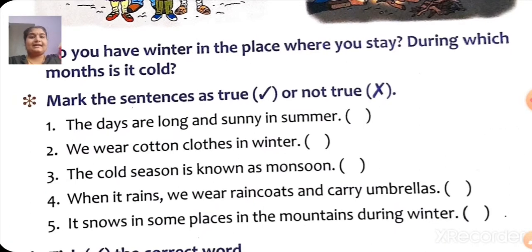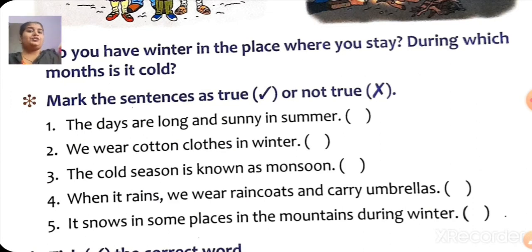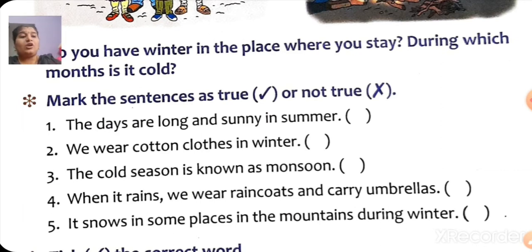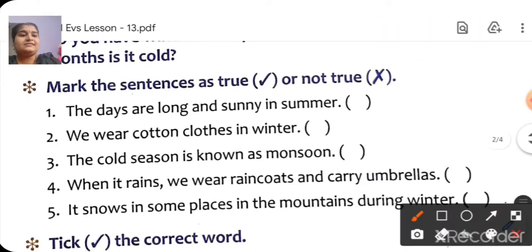Put the sentence as true or not true. If it is true, we will put a tick. If it is not true, we will put wrong. First: 'The days are long and sunny in the summer.' Is it true or not true? The days are long and sunny in summer — so it is true. Put a tick.